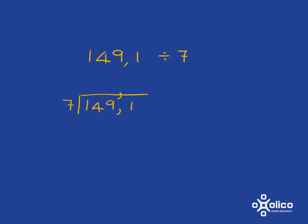So we start by saying how many sevens are there in one? Well we can't do that. So then we look at 14. How many sevens are there in 14? There are two sevens in 14 and nothing left over.